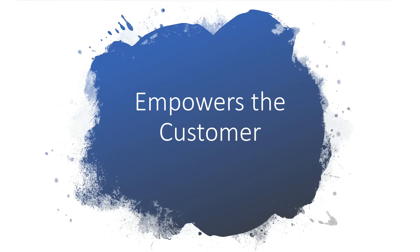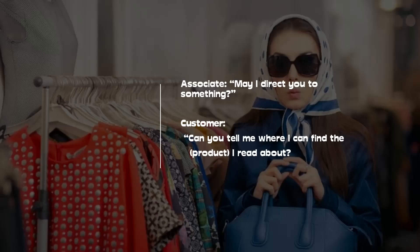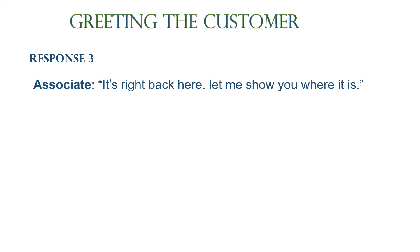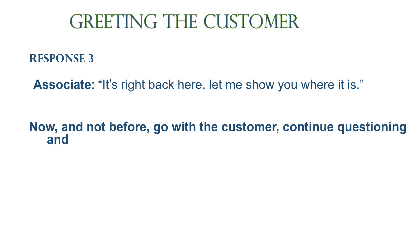The sales associate in the store always has the power, and when a customer walks in, no matter their communication style, they don't have as much power. We always need to level that off — empower the customer without giving away all your power. By saying 'I'll try to tell you where to find it,' you empower the customer. Third response: customer says 'Can you tell me where I can find a product I read about?' — 'Right back here, let me show you.' Now we start qualifying.